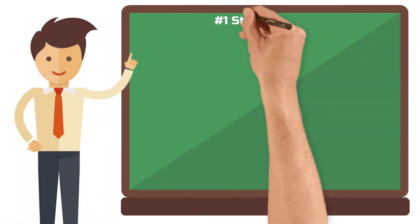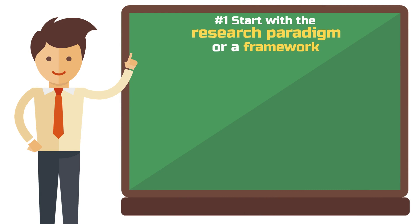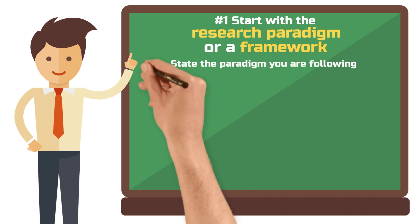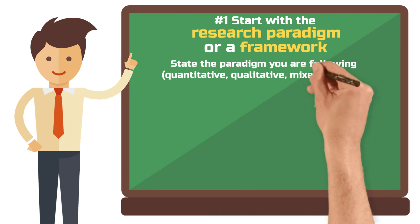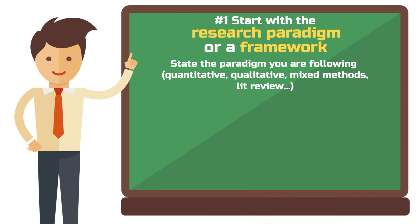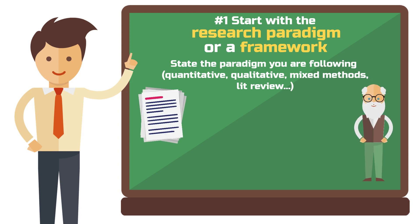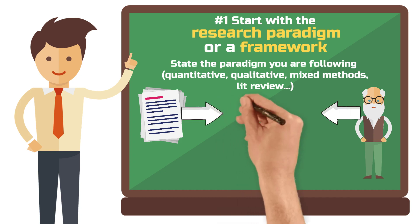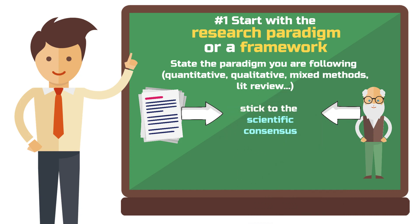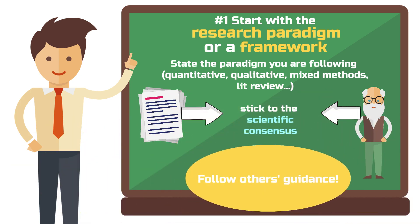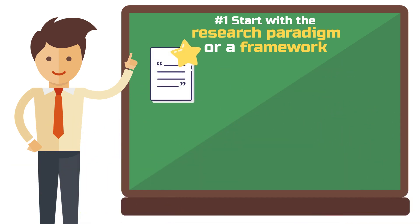Principle number one: start with the research paradigm or a framework. To start your methodology section, you should state the paradigm you are following — for example, quantitative, qualitative, qualitative methods review, design science, action research, and so on. You then name a specific framework or an author that provided guidelines you follow for your data collection and analysis. After many decades of empirical research, some authors have developed a scientific consensus on how to conduct these approaches, so you simply follow their guidance. Search for the most cited methodological frameworks in your discipline and compare which one is best suited for your study.